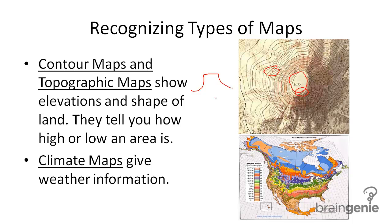Climate maps are maps you see when you watch the weather on the news or when you look up the weather in the newspaper. Climate maps can give us all sorts of weather information, anything from just what temperature it's going to be outside to the average rainfall of an area.